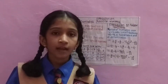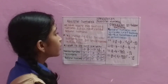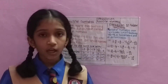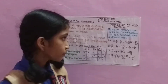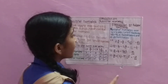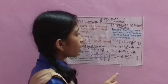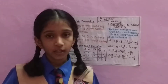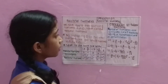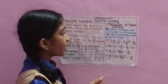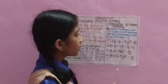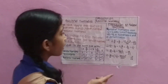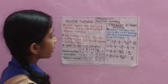Rational numbers are written like a fraction using a numerator and denominator. For example, 2 upon 30 — here 2 is the numerator and 30 is the denominator. This is a basic example of a rational number.